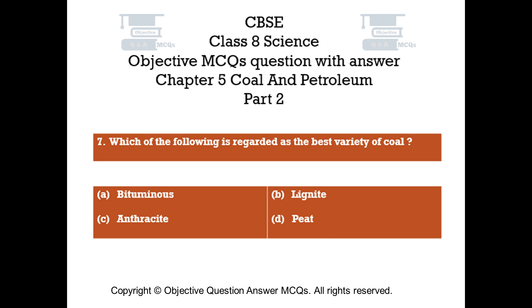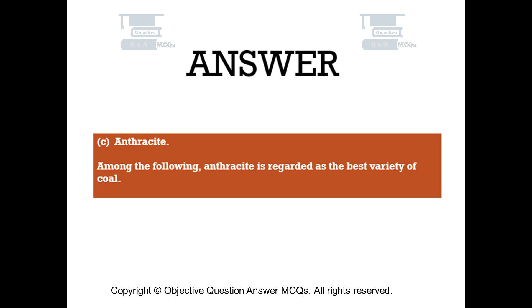Question number 7: Which of the following is regarded as the best variety of coal? Option A: Bituminous. Option B: Lignite. Option C: Anthracite. Option D: Peat. The right answer is Option C: Anthracite. Among the following, anthracite is regarded as the best variety of coal.